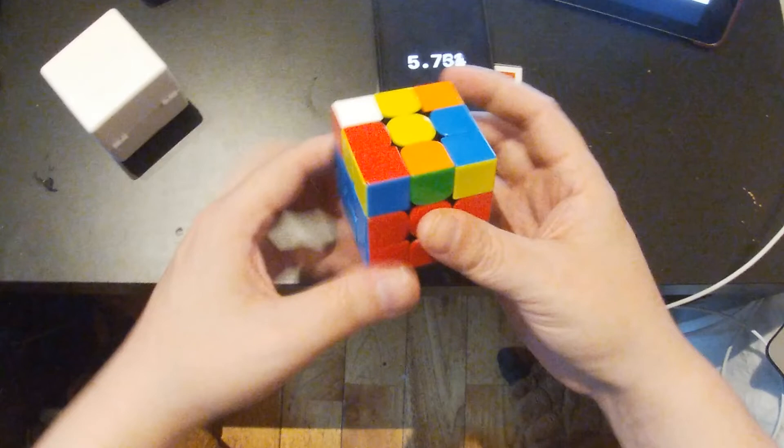So I'm going to then put the red and green edge in with the, take the edge out with an R, so a U, sexy move, and then R, U2, R prime to set up a three-move insert.